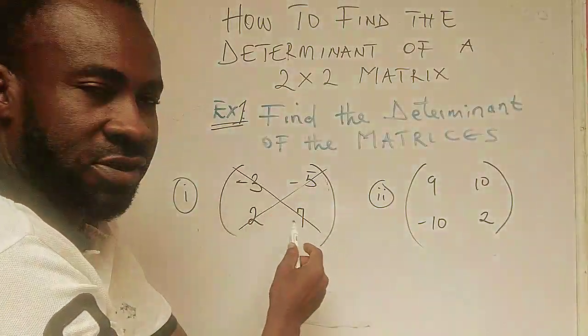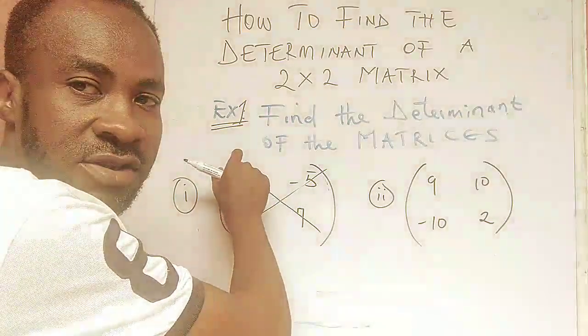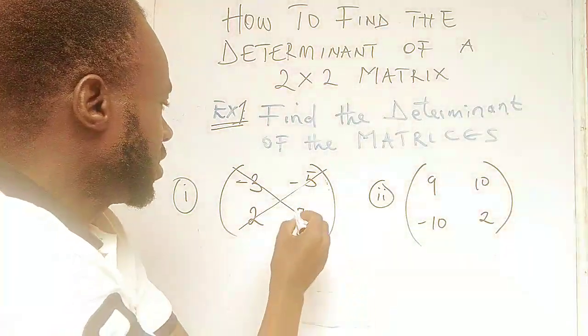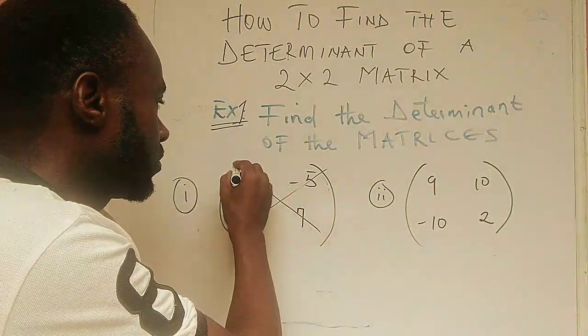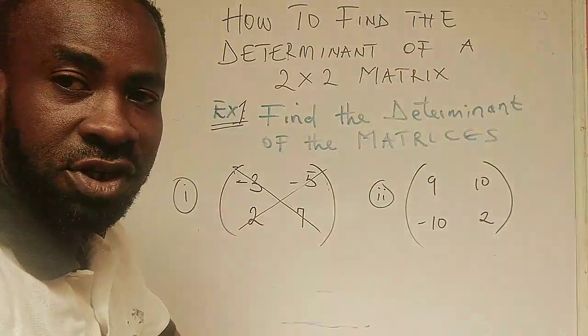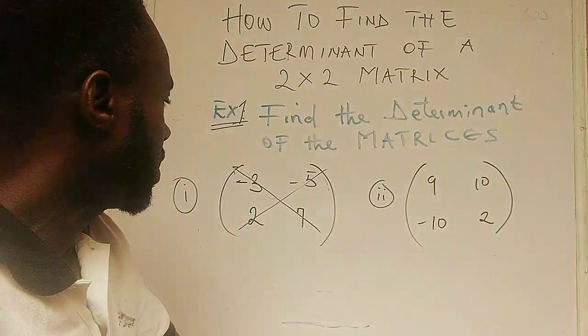This diagonal that slopes down from the left down to the right, this is the major diagonal. Let me circle the major diagonal with a blue marker.